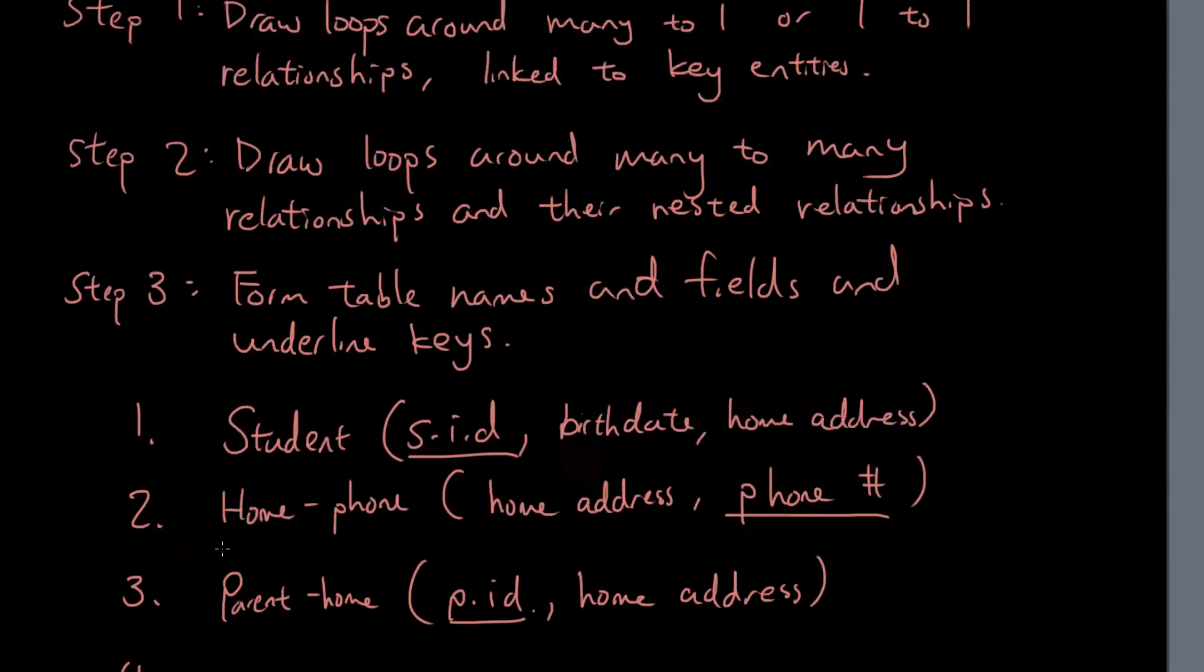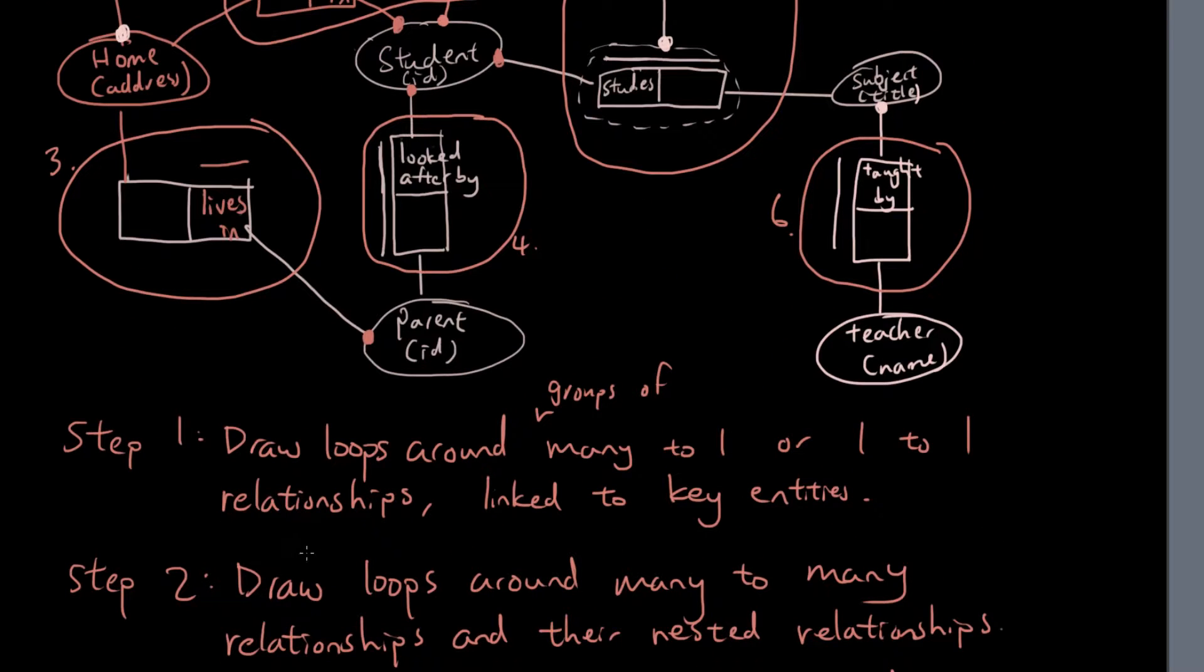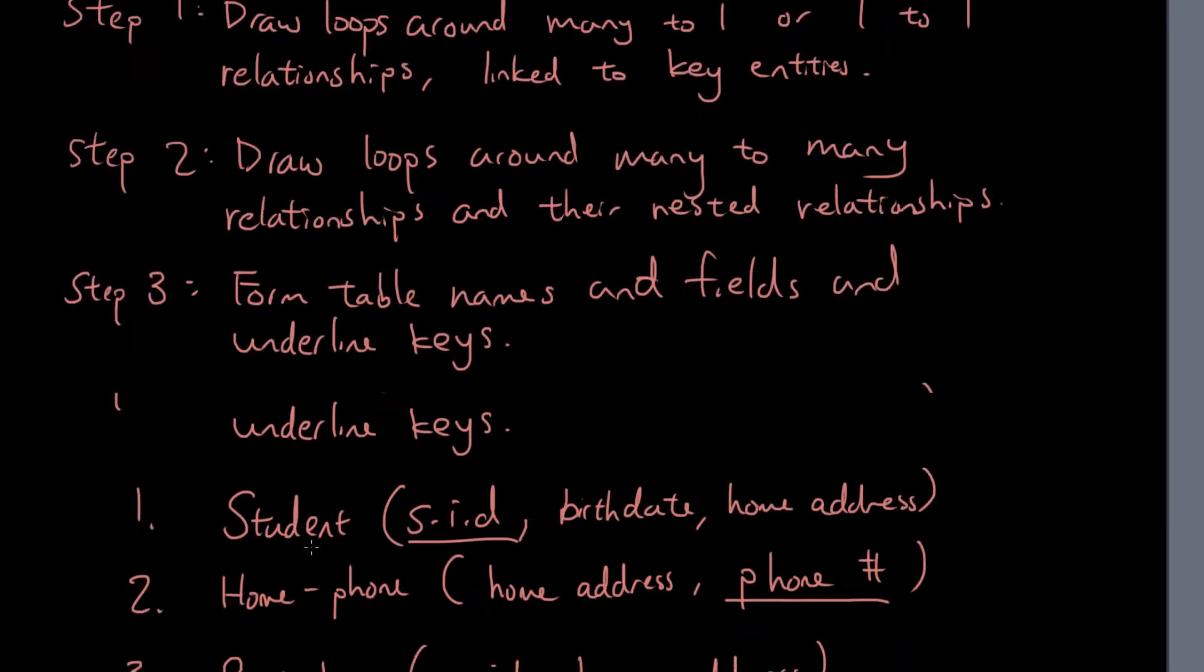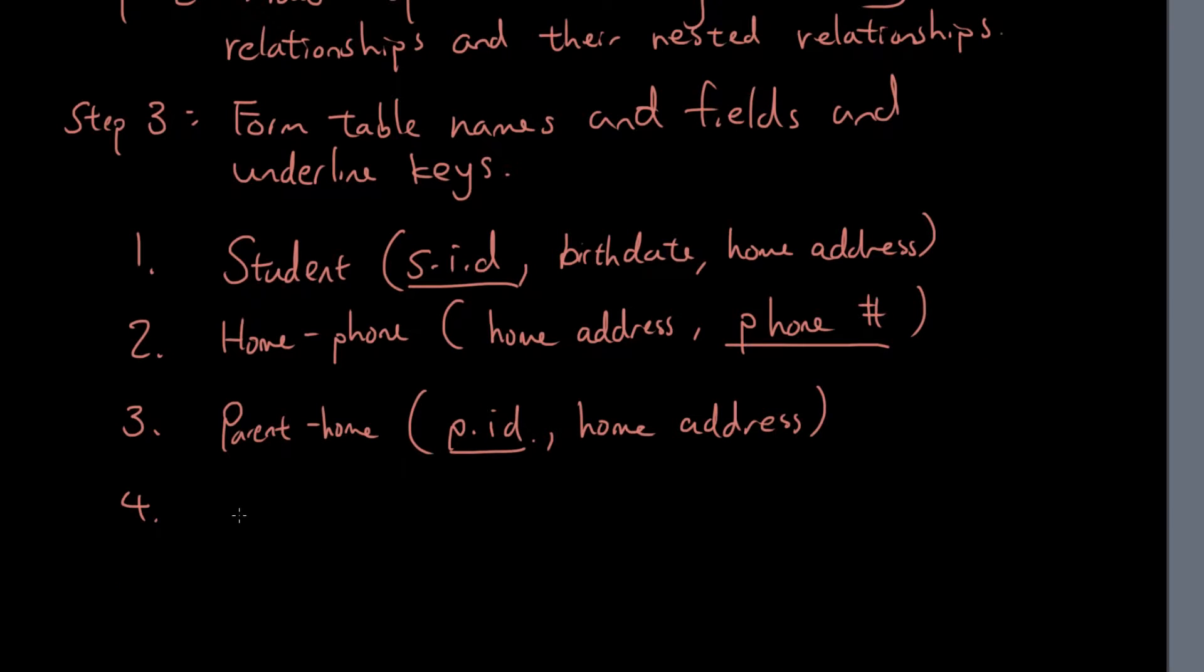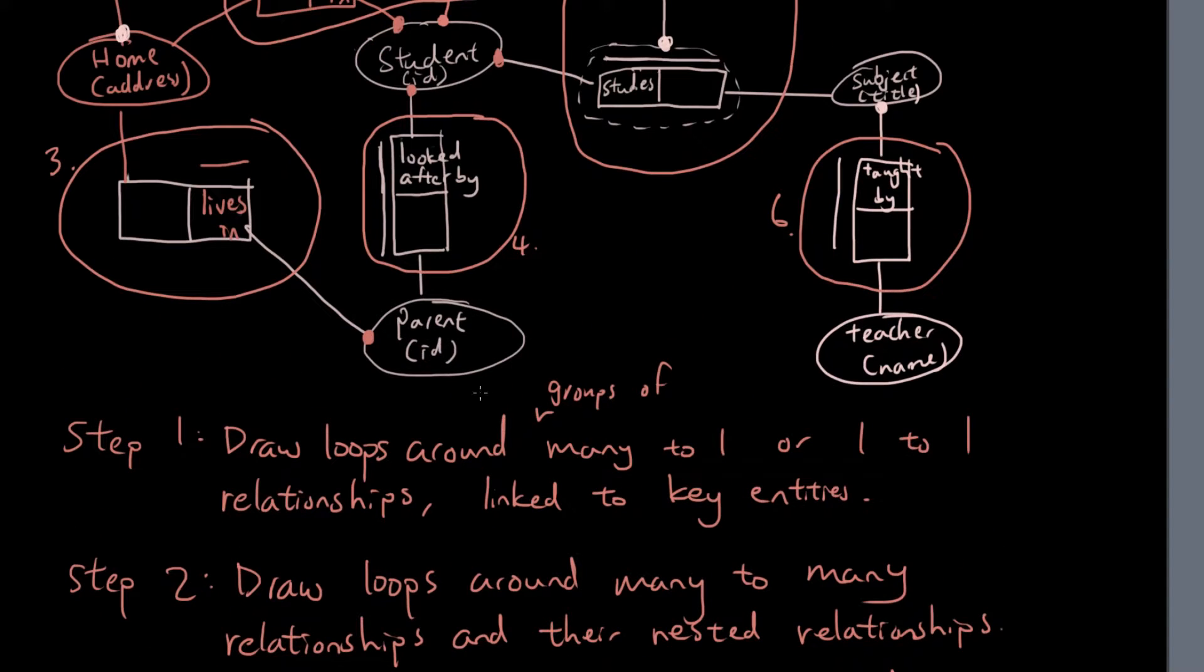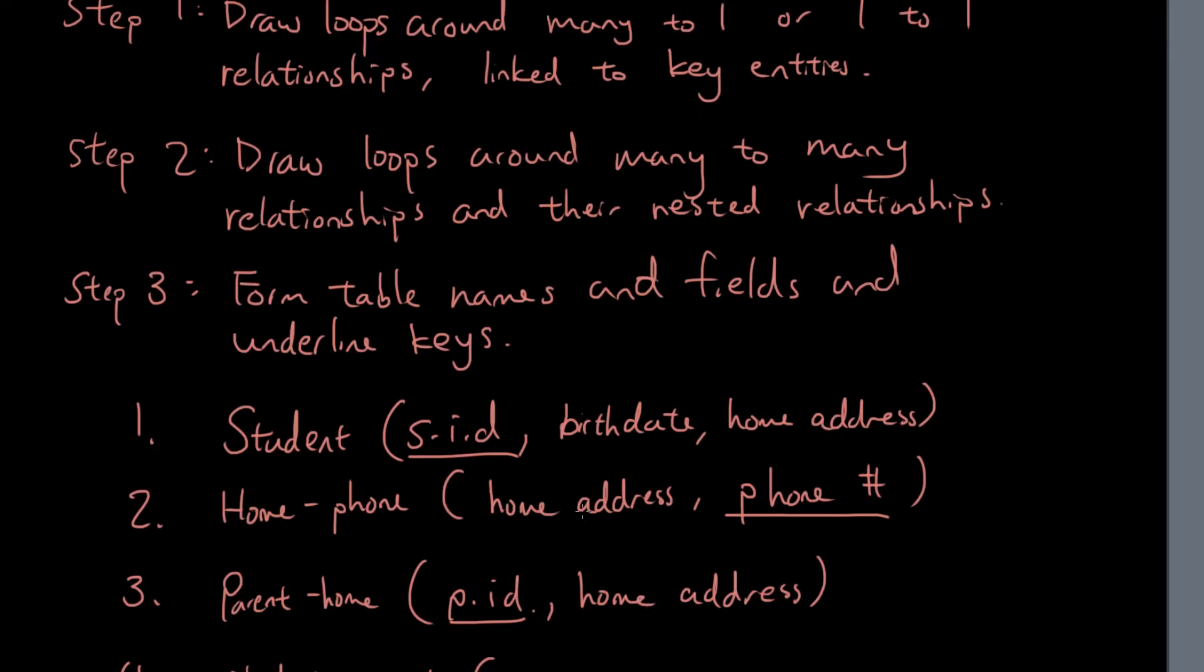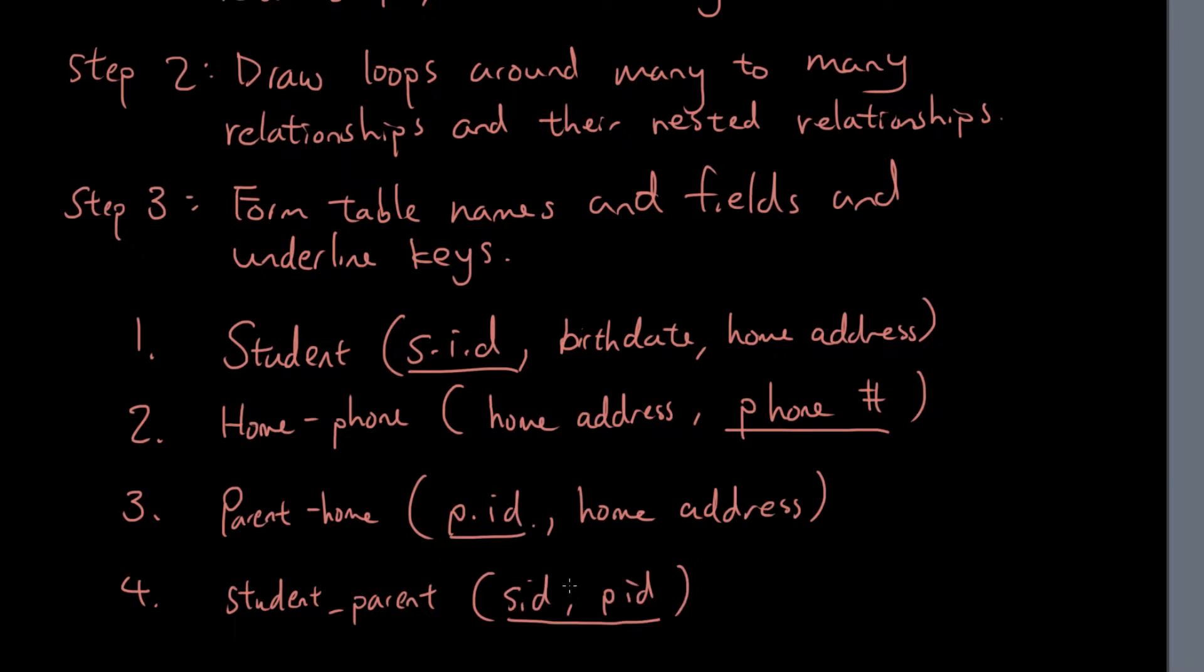And what do I have for number four? Number four, I have student and parents. And we have a many to many relationship. So we got the combination of both student ID and the parent ID are both keys.